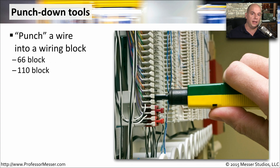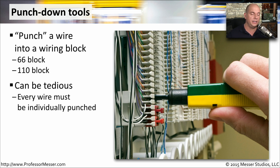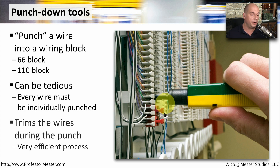If you're going to work with punchdown blocks, such as 66 blocks or 110 blocks, then you're going to need a punchdown tool like this one. This is going to push the wire into the punchdown block, cutting through the insulation and making a solid connection to the copper wire underneath. This can also be a tedious process as you connect wire after wire to these punchdown blocks, but it's one of the best ways to connect a permanent link for your wires and your network. This is also going to trim the wires as you're punching it down, making a very neat connection on the punchdown block.